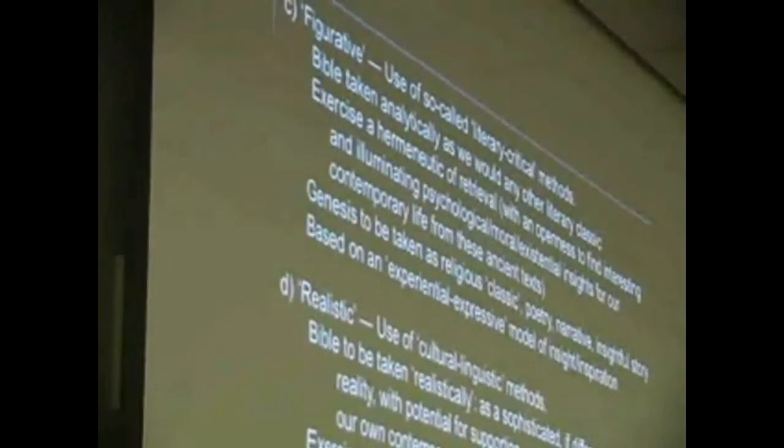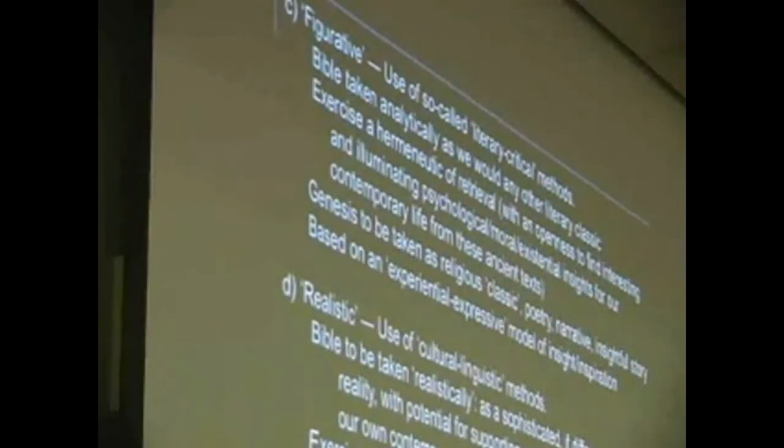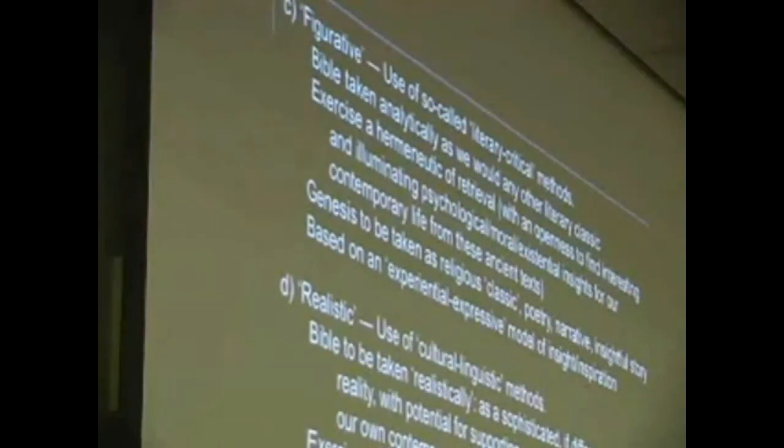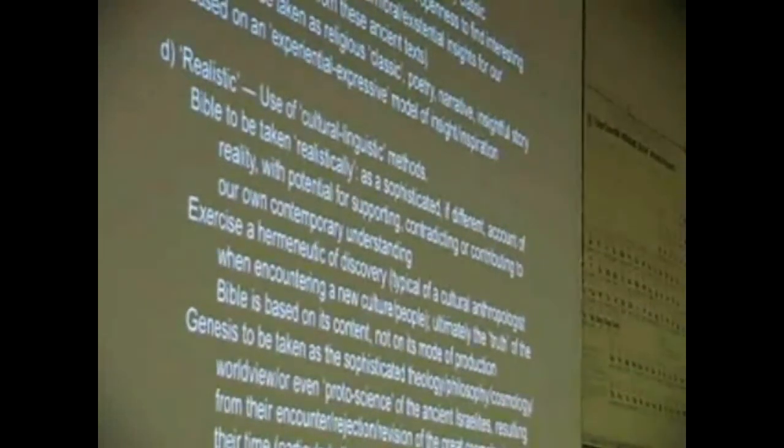The third approach I think may be helpful is what I would call a figurative reading, using literary-critical methods, where we try to see the biblical texts in the context of other parts of Scripture. This kind of way of reading Scripture is much more useful and fruitful. It suggests to us that the opening chapters of Genesis might not really be about how the world came into being, but might be about how we understand the world as God's throne place, as the temple of God.